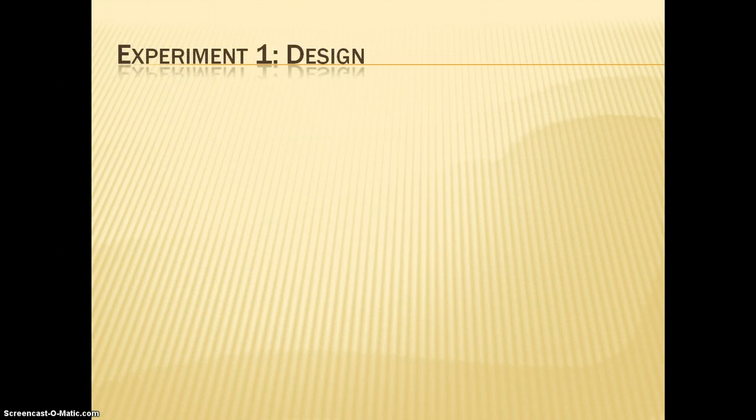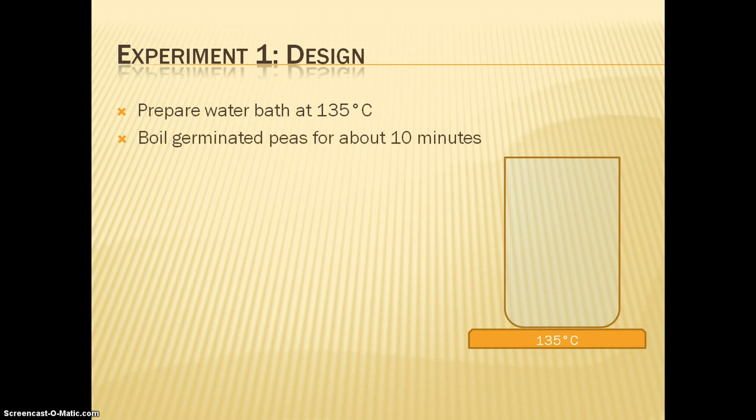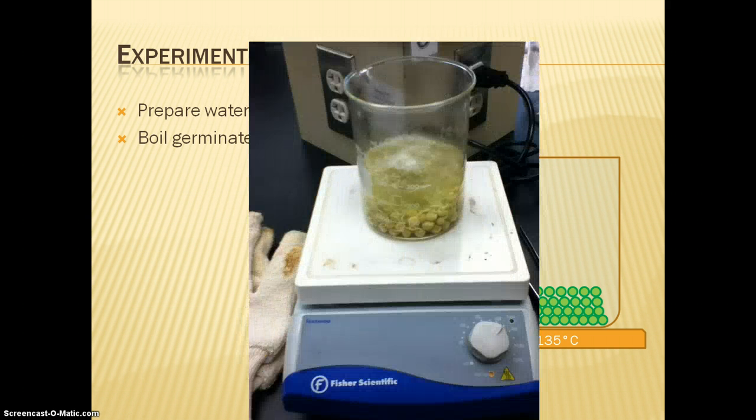Here is our design. Our experimental design for our first experiment is as follows. First, you prepare a water bath at 135 degrees Celsius. You boil the germinated peas for about 10 minutes. Here I have a little animation. There are the peas. And 10 minutes. Here's an actual picture that we have of the peas when they were boiling.